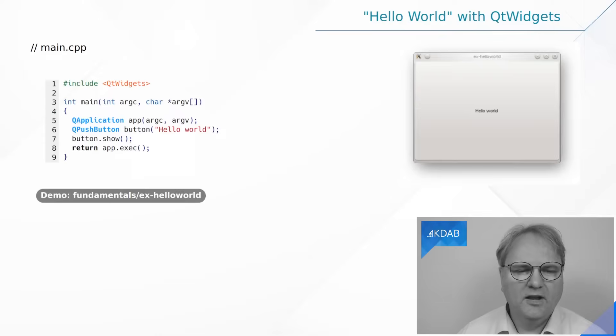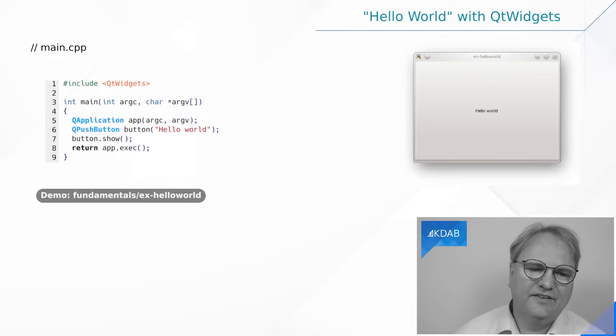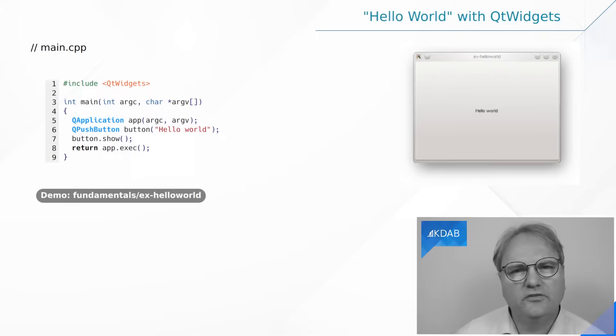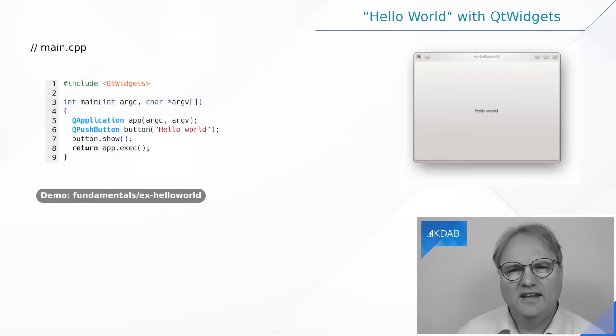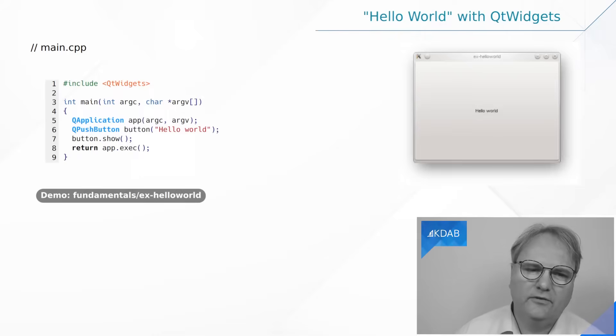Okay, enough talk. Let's see what a Qt application looks like — or more specifically, a Qt Widgets application. From this point on in the rest of the training, I'll just say Qt when I really should say Qt Widgets. What you see here is the very simplest Qt application you can create. Qt is written in C++, and while there are language bindings for other languages, this training is focused on C++ Qt. For that, we need a main — that's what you see on line three.